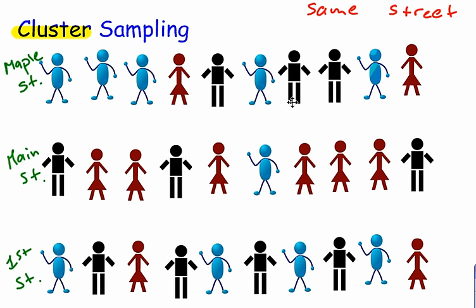So what I do is I use SRS once again. But this time, I'm going to use SRS to randomly choose one street. So Maple Street gets the number one, Main Street gets the number two, and First Street gets the number three. Hopefully that doesn't confuse you that First Street gets the number three.